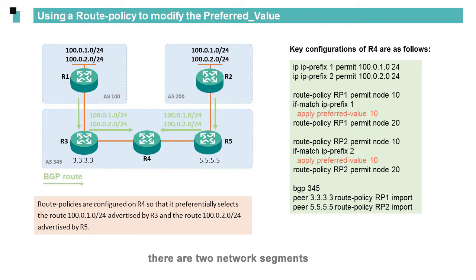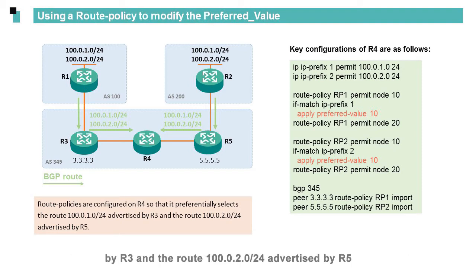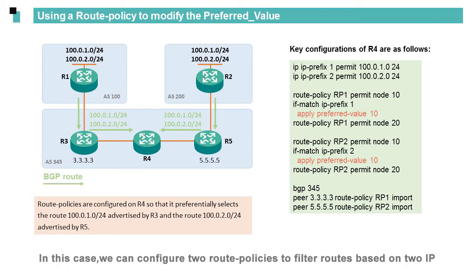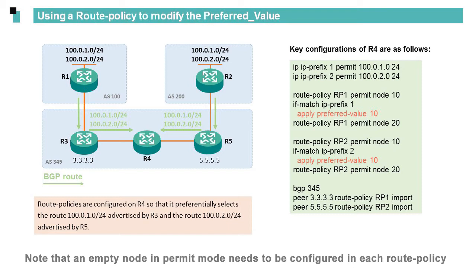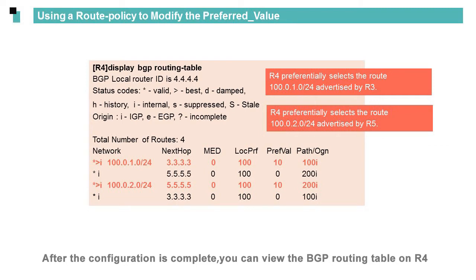As shown in the figure, there are two network segments. It is required that R4 preferentially select the route 100.0.1.0/24 advertised by R3 and the route 100.0.2.0/24 advertised by R5. We can configure two route policies to filter routes based on two IP prefix lists and set the preferred value of the routes matching the IP prefix lists. Note that an empty node in permit mode needs to be configured in each route policy. Finally, we need to run the 'peer route-policy import' command to apply each route policy to the relevant peer. After the configuration is complete, you can view the BGP routing table on R4, where R4 preferentially selects the route 100.0.1.0/24 advertised by R3 and the route 100.0.2.0/24 advertised by R5.